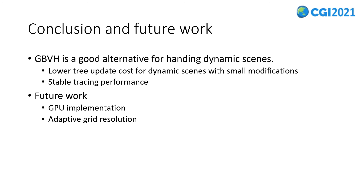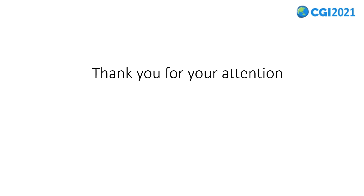Now I would like to close my talk. The GBVH method is considered a good alternative for handling dynamic scenes. It requires lower tree update cost for dynamic scenes with small modifications, and there is no performance instability found in the refitting approach. Currently, the method is evaluated only with CPUs. In the future, GPU implementation is of course necessary. In addition, we would like to investigate the possibility of enhancing tree quality by changing grid resolution adaptively. That's all for my presentation. Thank you for your attention.